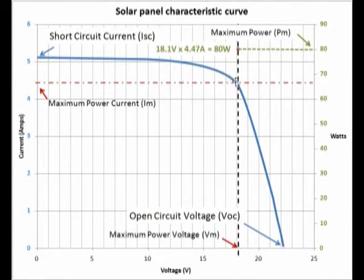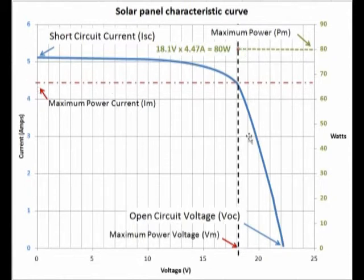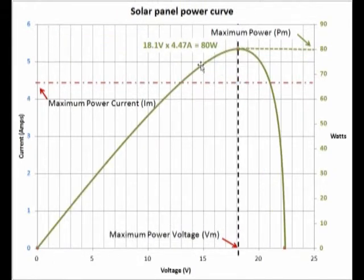If we look at that point on the curve where voltage is highest and current is highest together, it's called the knee of the curve. That's where the maximum power current and maximum power voltage combine to create the maximum power point — multiplying current times voltage gives us the maximum power point. Taking the maximum power current of 4.47 amps and the maximum power voltage of 18.1 volts and multiplying them together, we come out at 80 watts.